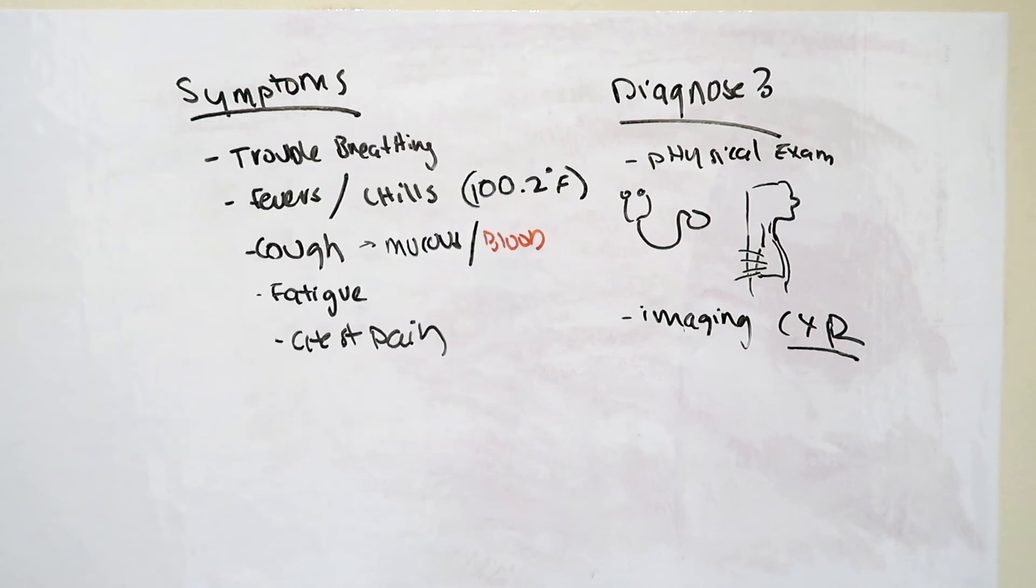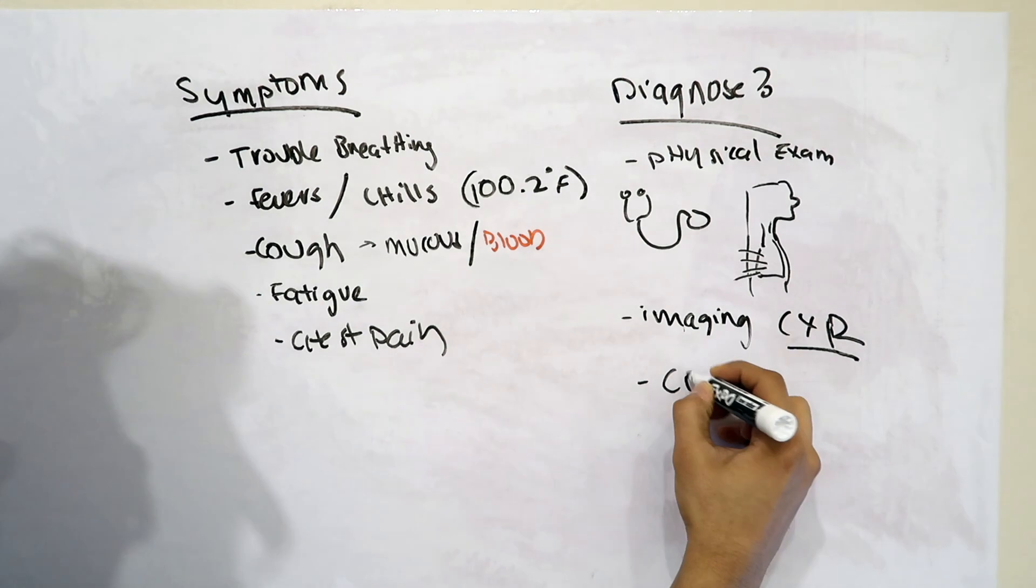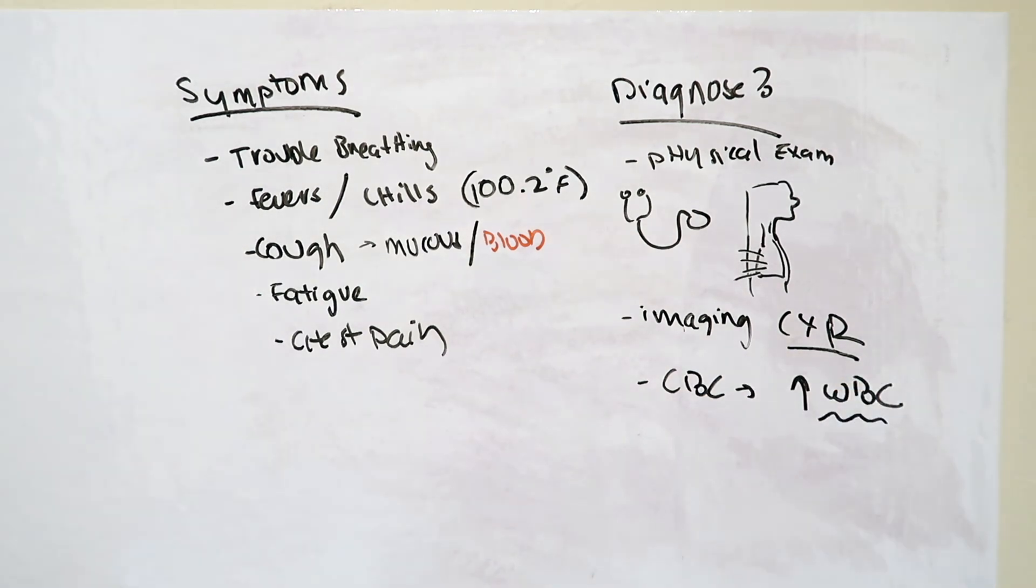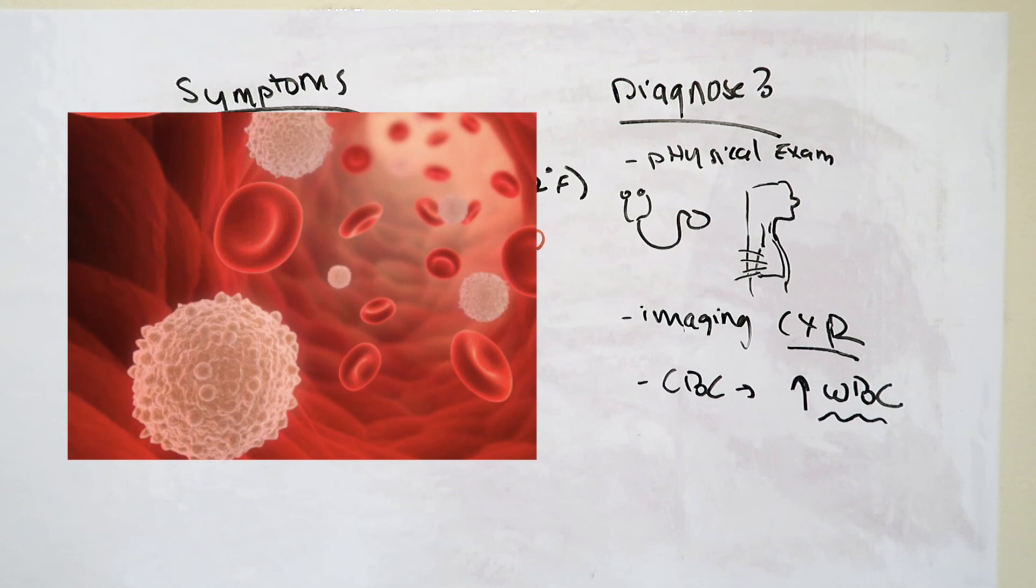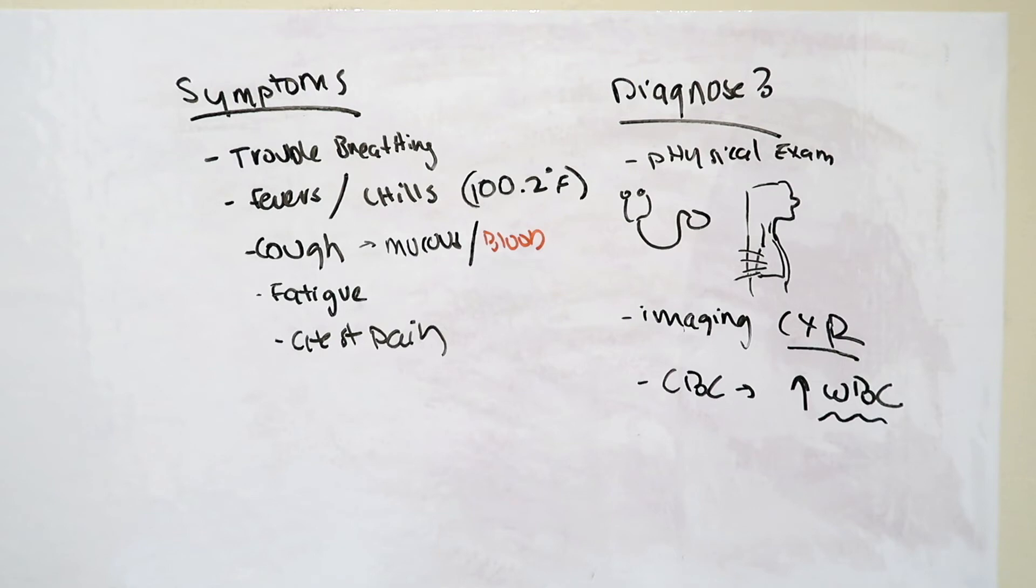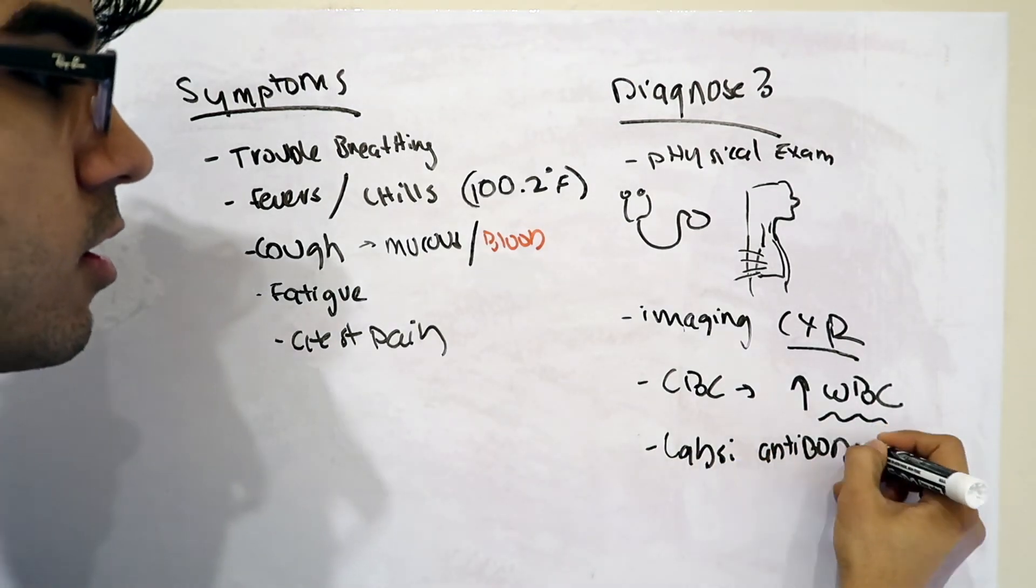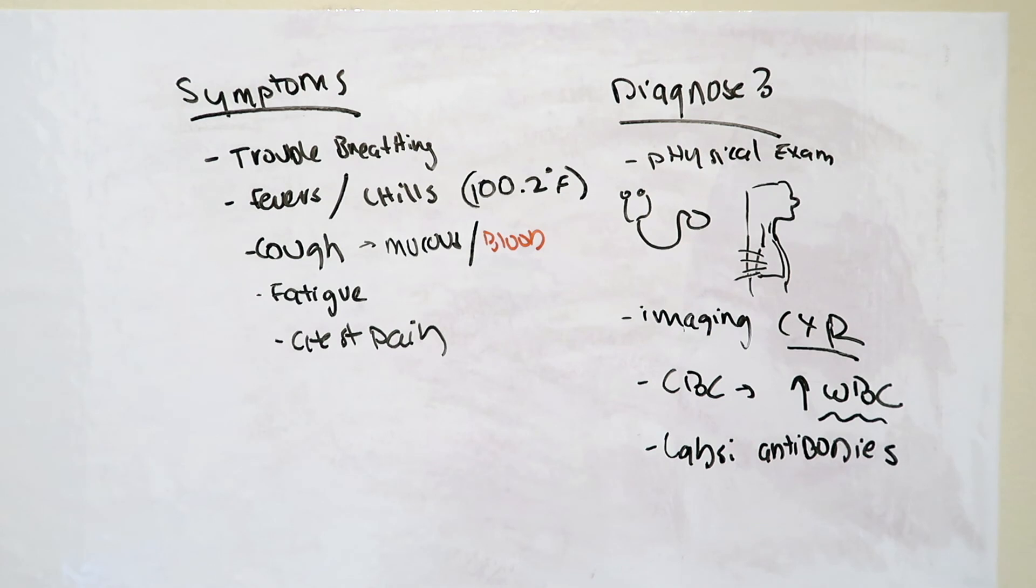We're actually able to do laboratory assessments, such as checking a complete blood cell count in order to check the white blood cell count, because if this is high, that means the body is fighting off an infection. White blood cells are responsible for fighting any infections or pathogens in our body that should not be there. Other laboratory assessments include checking the blood for actual antibodies, which is our body's response to certain pathogens.